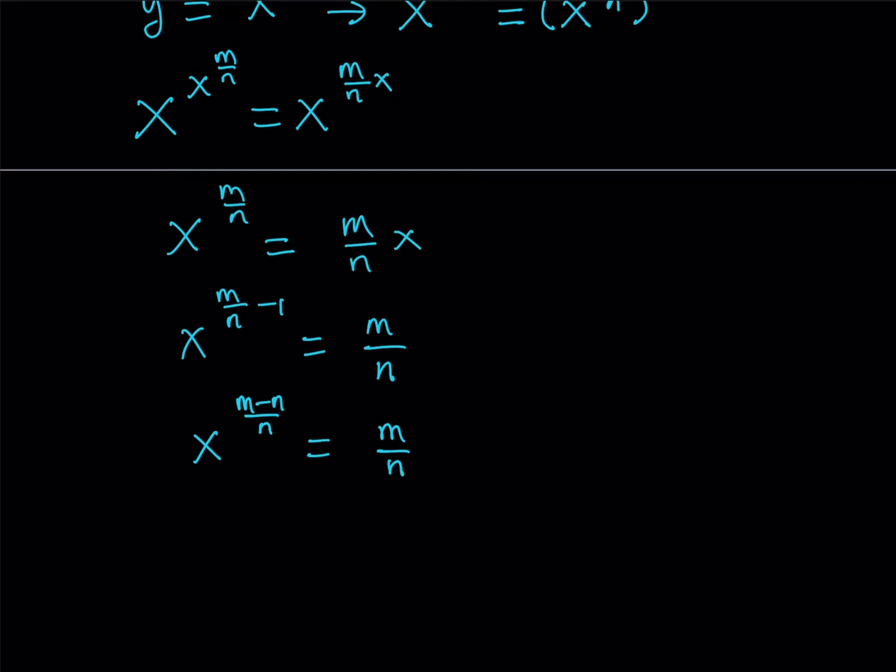And that will be the reciprocal of the exponent, which is n over m minus n. Because the product is 1, so it's going to give me x. And of course, I have to do the same thing on the right-hand side as well.